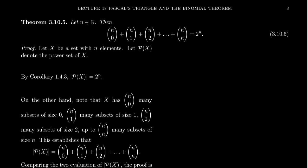Here's a nice one. Let n be a natural number — this includes the possibility that n equals zero. Then if you take the sum of all binomial coefficients where the top number is always n — n choose 0 plus n choose 1 plus n choose 2 plus n choose 3 all the way up to n choose n — this equals two to the n. We can write this as the sum where k equals zero to n of n choose k, and we claim this equals 2^n.